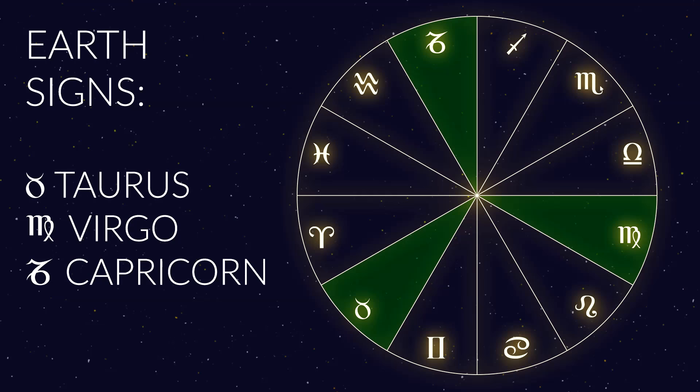Next we have the earth signs: Taurus, Virgo, and Capricorn. Earth signs are known for being grounded, down to earth, concerned with more tangible things, very sensible, pragmatic, more organized, and also maybe a little more stubborn or slow to change — just a little more slow-moving in general.